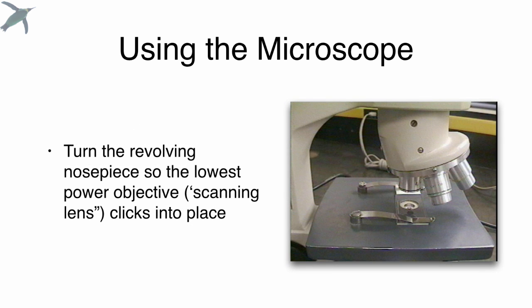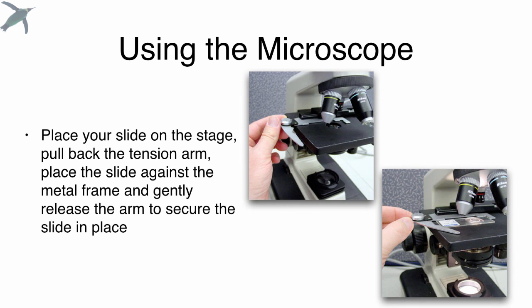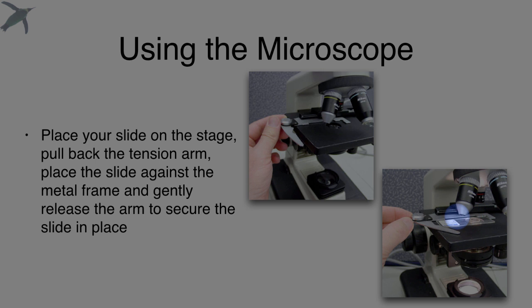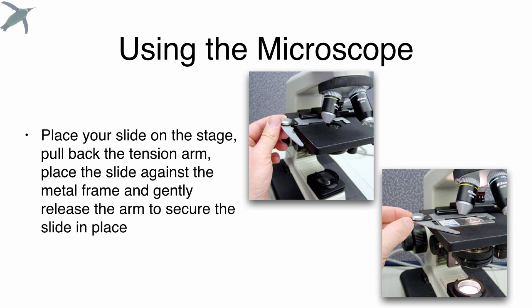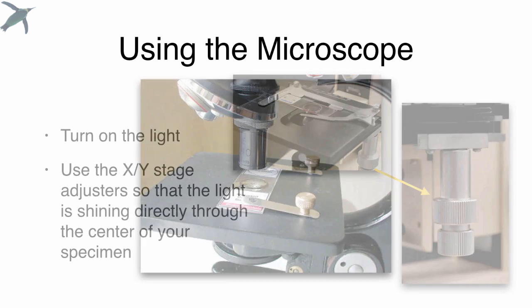You want to turn the revolving nose piece so that the lowest power objective, we call that the scanning lens, it has the smallest number on it and it is the shortest. You want to click that little guy into place, put your slide on the stage, and if you have a tension arm, you want to pull that back. There's a little frame in there that helps to hold the slide, and then the tension arm keeps it from moving around. Now you can use those coaxial controls to very smoothly move the slide and adjust it so that the light is shining directly through the center.